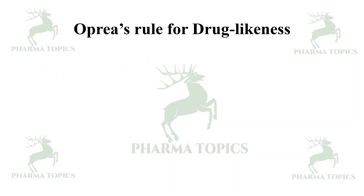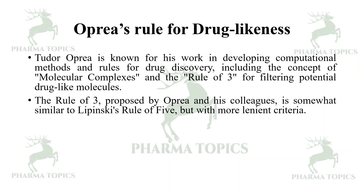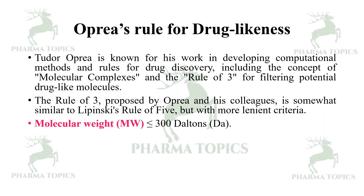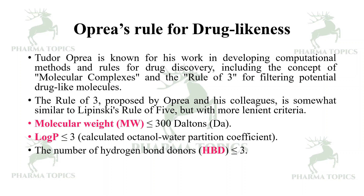The next guideline is Oprea's Rule for drug likeness. Tudor Oprea is known for developing computational methods and rules for drug discovery, including the Rule of Three for filtering potential drug-like molecules. This rule is somewhat similar to Lipinski's Rule of Five but with more lenient criteria: molecular weight should be less than or equal to 300 Daltons, logP less than or equal to 3, and hydrogen bond donors less than or equal to 3 — which is why it is called the Rule of Three.